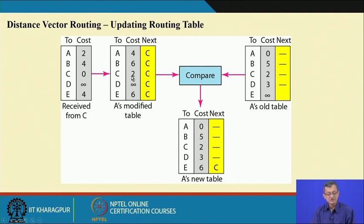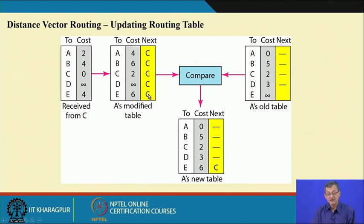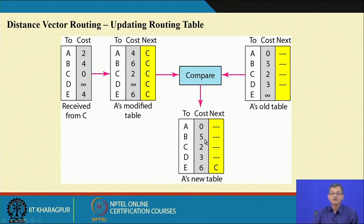Going to C via C is 2, and it keeps that. For D, C does not have any information, but A already has reaching D as 3, so it maintains that. For E, C says via C there is a path with cost 6, whereas A's initial table says infinity, so it updates to 6. A's routing table after receiving information from C is updated accordingly.